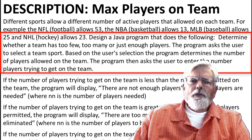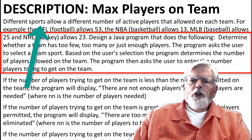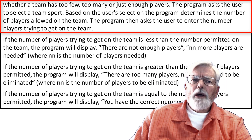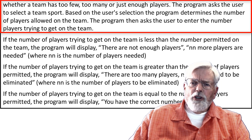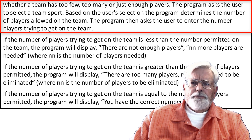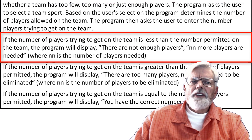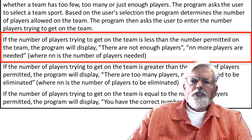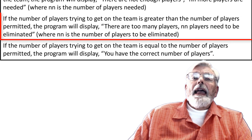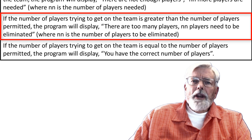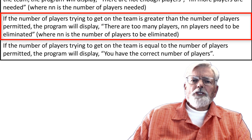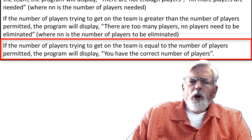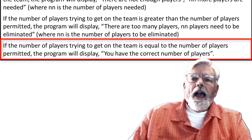Design a Java program that determines whether a team has too few, too many, or just enough players. The program asks the user to select a team's sport. Based on the user's selection, the program determines the number of players allowed on the team, then asks the user to enter the number of players trying to get on the team. If too few, it displays there are not enough players and how many more are needed. If too many, it displays there are too many players and players need to be eliminated. If equal, it displays you have the correct number of players.